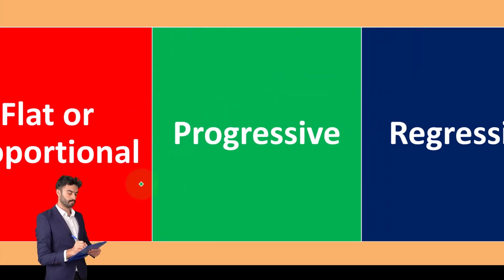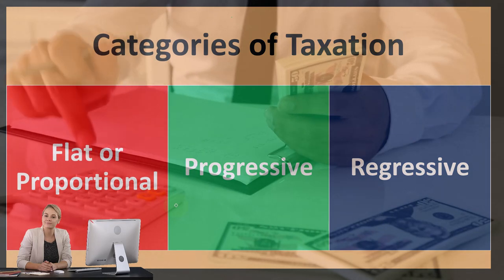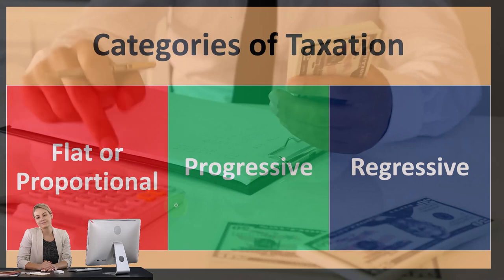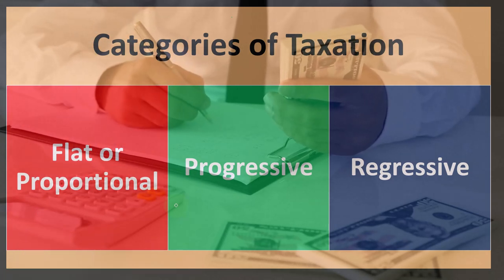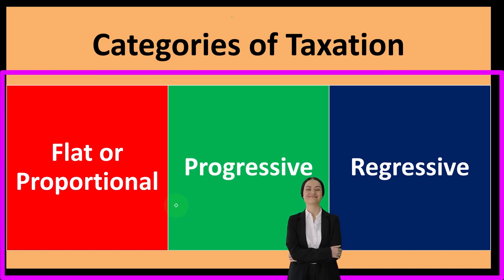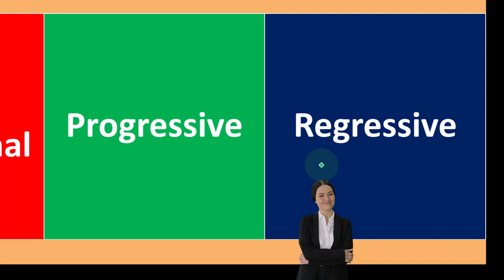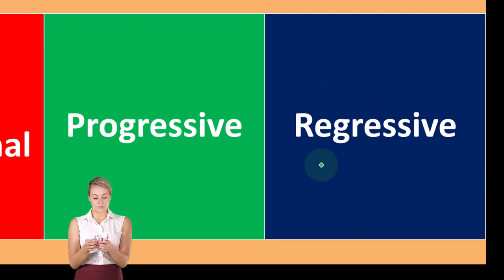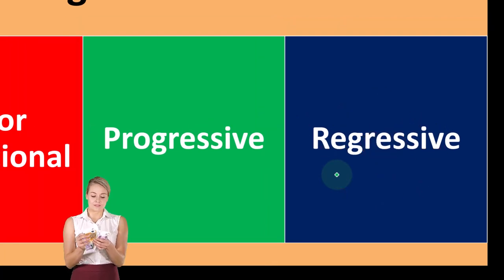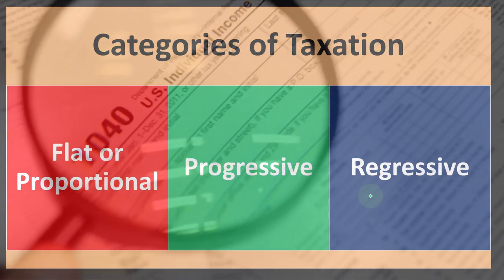These two aren't necessarily absolute opposites. You can imagine things being more or less progressive — whether you have more tiers, more layers of taxation, or a really high top rate. Regressive is a term often used to downplay a tax; a politician who doesn't like a tax policy will call it regressive, indicating that people on the low end are bearing more of the brunt. These terms are thrown around with very little nuance.